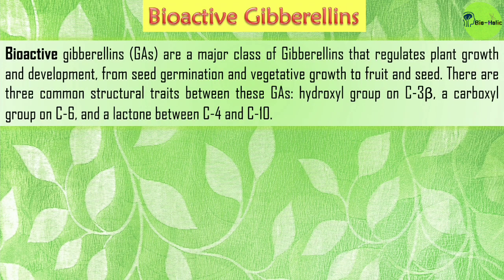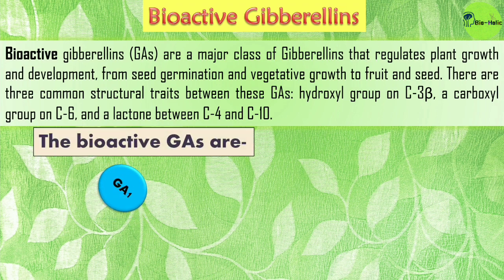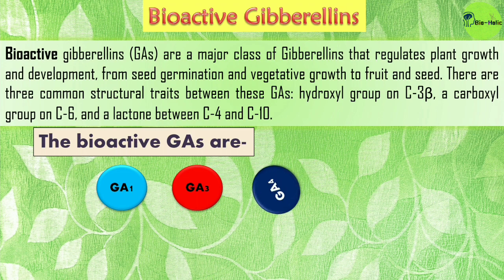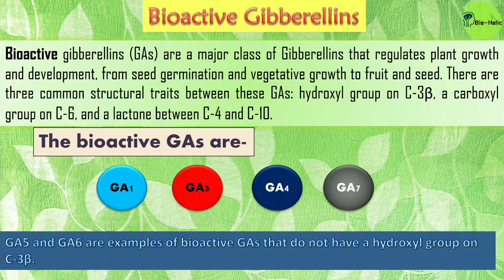Bioactive gibberellins are a major class that regulates plant growth and development from seed germination and vegetative growth to fruit and seed development. There are three common structural traits: a hydroxyl group on C-3 beta, a carboxyl group on C-6, and a lactone between carbon-4 and carbon-10. Examples of bioactive gibberellins are GA-1, GA-3, GA-4, and GA-7. GA-5 and GA-6 are bioactive gibberellins that do not have a hydroxyl group on the C-3 beta position.